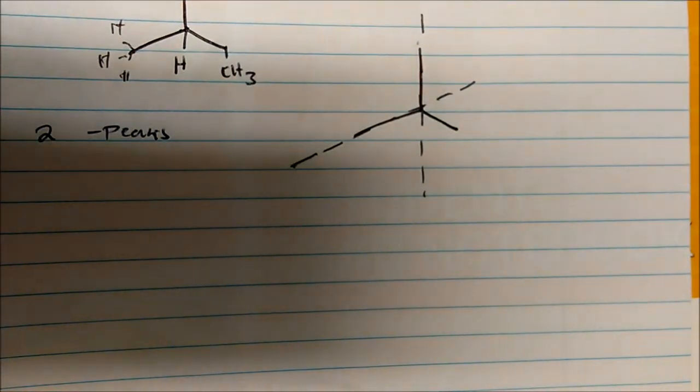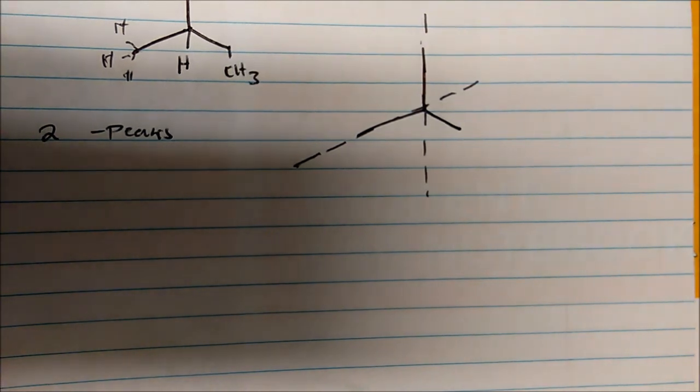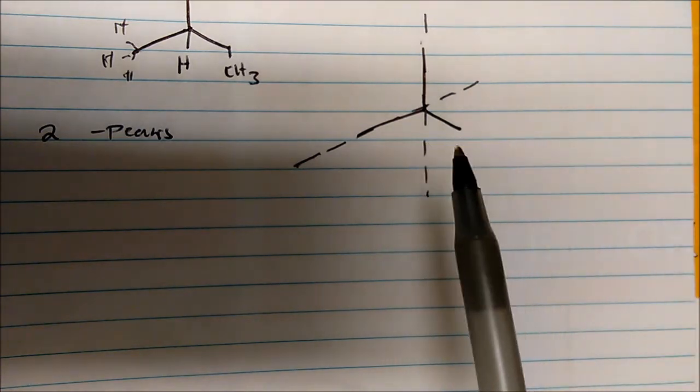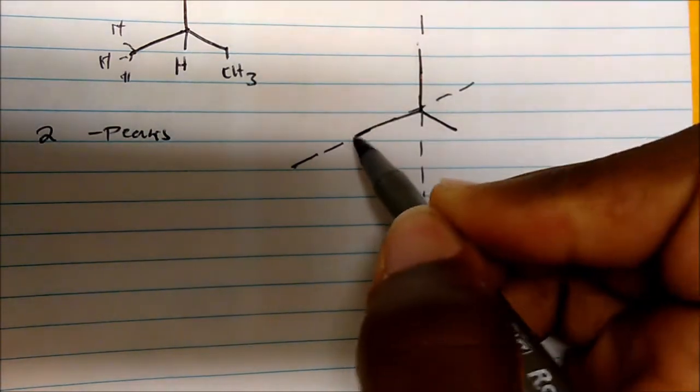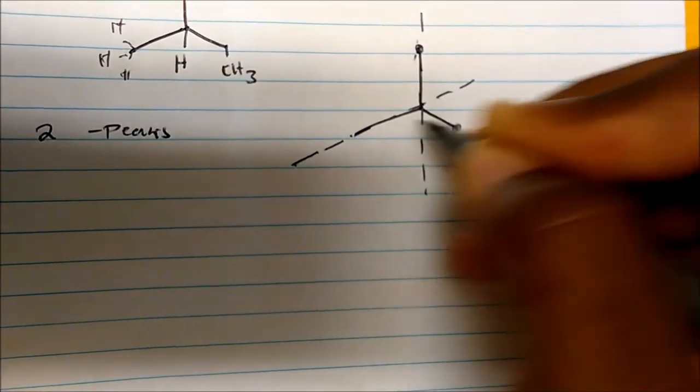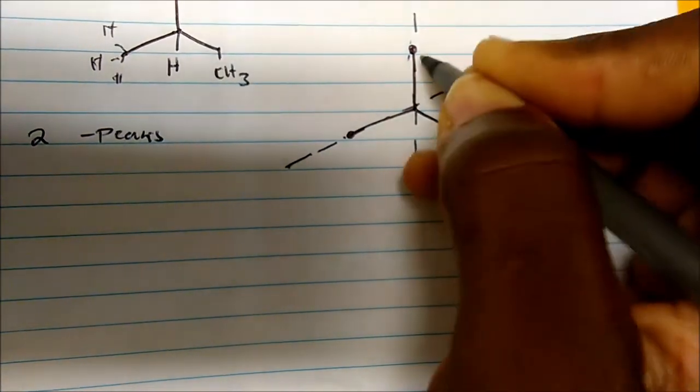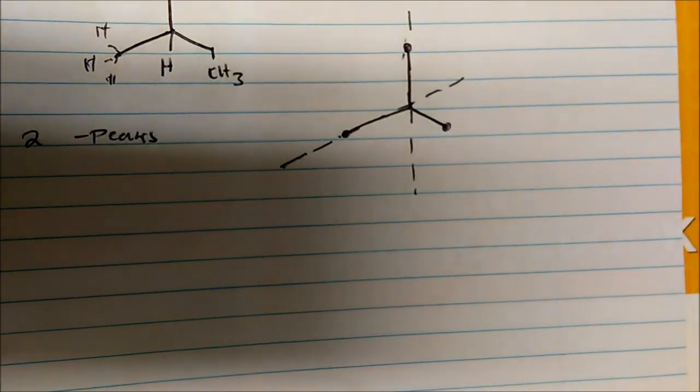Remember we said that protons in the same chemical environment will only equate to one chemical shift. There's only going to be one peak because essentially all these carbons are in the same chemical environment. Going back to carbon-13, these carbons are in the same chemical environment, so they're essentially the same carbon. We're not saying they're the same carbon - they're in the same chemical environment, so for NMR purposes...